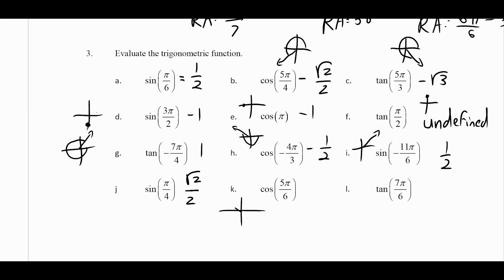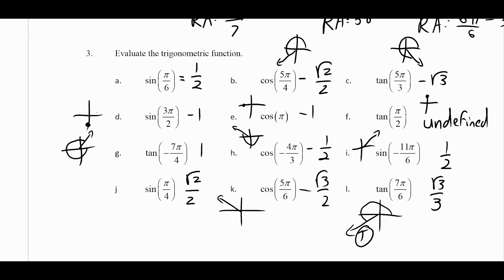Cosine of 5π over 6 is 150 degrees with a reference angle of 30 degrees. Cosine there is root 3 over 2, but since it's in the second quadrant it's negative. Tangent of 7π over 6 is in the third quadrant with a reference angle of 30 degrees — that's root 3 over 3, and it's positive because tangent is also positive in the third quadrant. Hope you enjoyed the first video for page one. Click the link in the top right-hand corner to move on to the next page — thanks for watching.